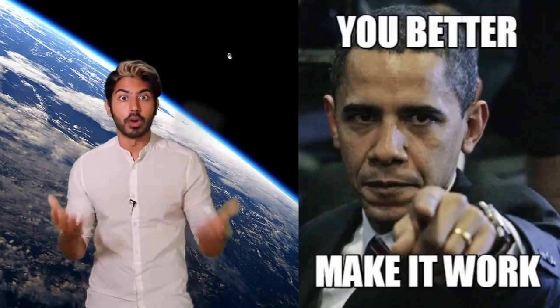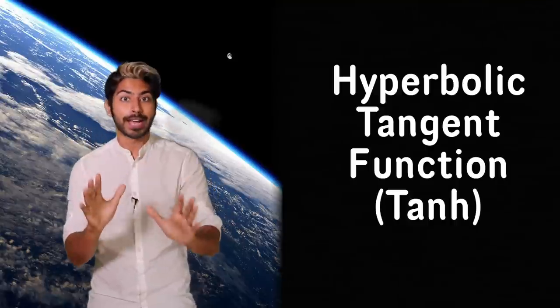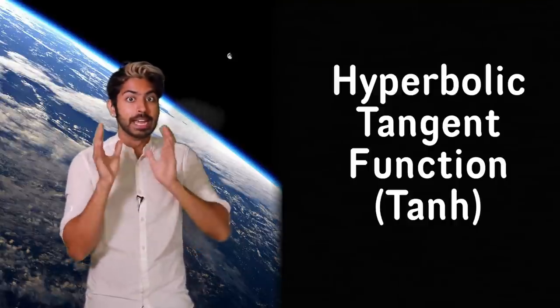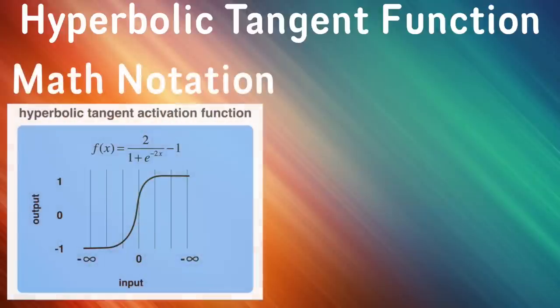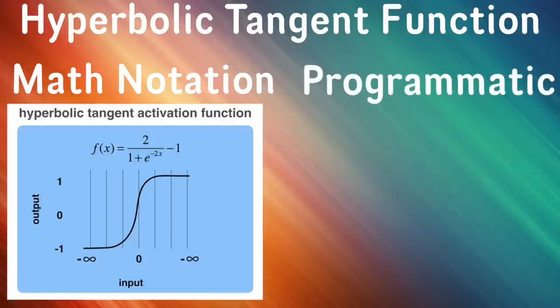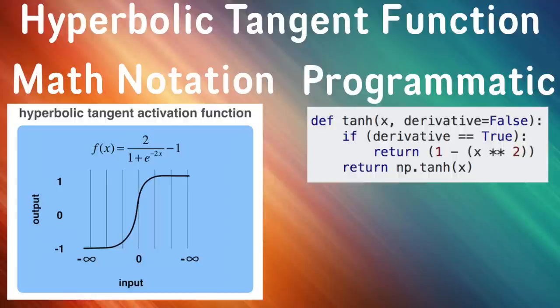So how do we improve on it? Well, there's another activation function called the hyperbolic tangent function, or tanh. It squashes the real number into a range between negative 1 and 1 instead of 0 and 1, so its output is zero centered, which makes optimization easier. So in practice, it's always preferred to the sigmoid. But just like the sigmoid, it also suffers from the vanishing gradient problem.